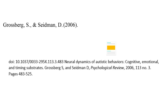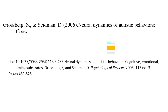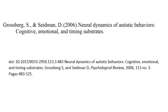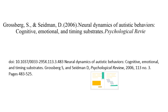Next comes the article title in sentence case: 'Neural Dynamics of Autistic Behaviors: Cognitive, Emotional, and Timing Substrates.' The journal title comes next, using italics and headline-style capitalization. So in this case, both words in the journal title — Psychological and Review — are capitalized.